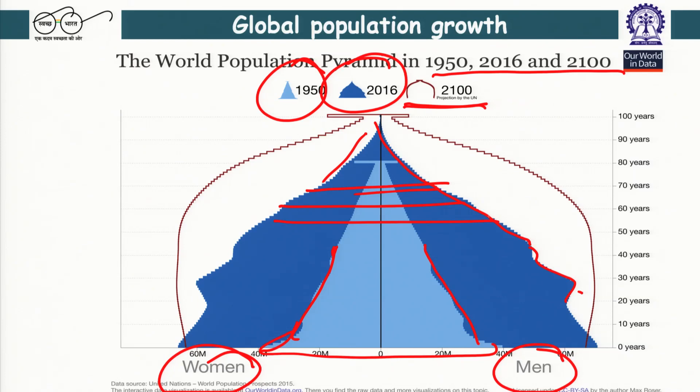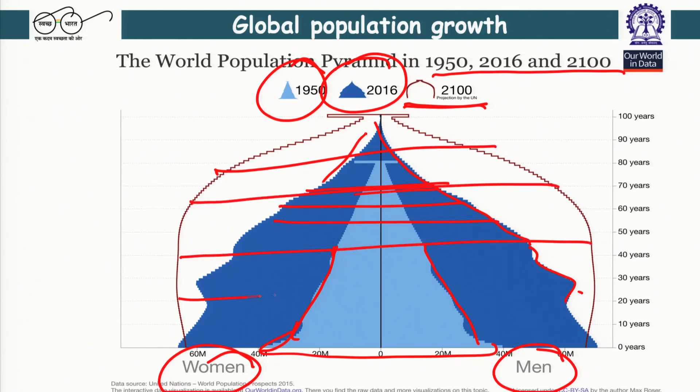In the projected figure for 2100, the width from top to bottom is almost uniform, meaning we will have a similar number of old people and young people. This has implications: the working-age population contributes to GDP, while older people need support through pensions and social security schemes. Those issues will also come up and will need solutions as we progress into the future.